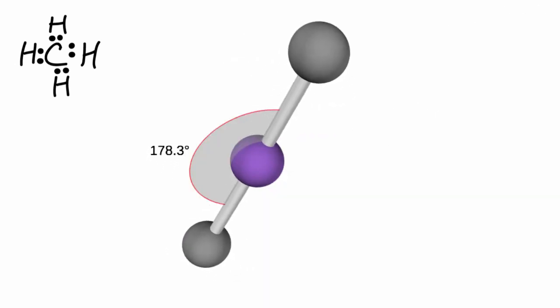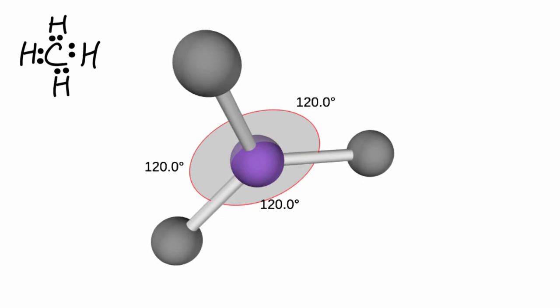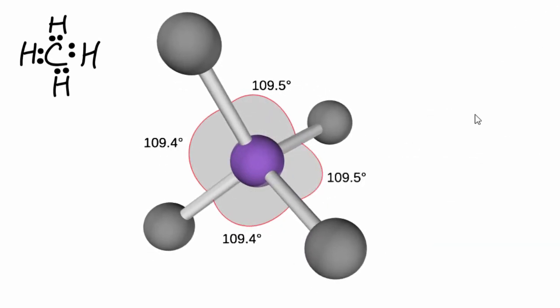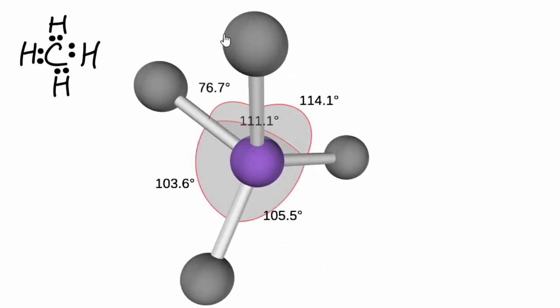We add one, then we add the second. They push away and spread out. Same for the third. And finally, that fourth pushes them away from each other, giving us that 109.5 degree bond angle.